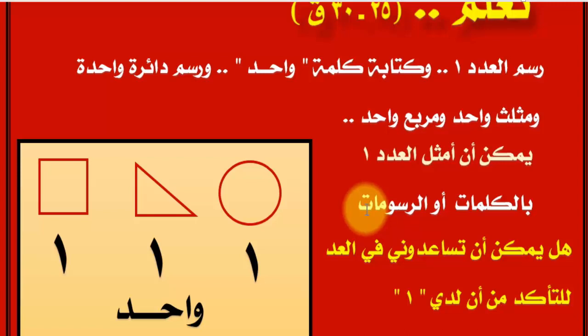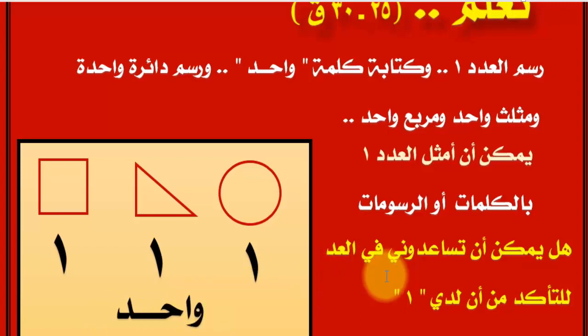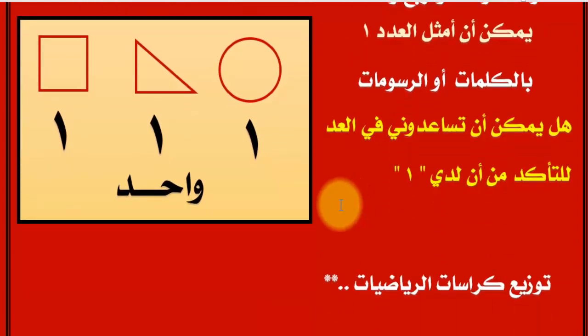المعلم بيقول للأولاد: هل يمكن أن تساعدوني عشان أتأكد إن اللي عندي ده واحد؟ فالأولاد يقولوا معاها: دائرة واحدة - واحد، مثلث واحد - واحد، مربع واحد - واحد. ويأكد عليهم كتابة كلمة واحد وحروفها: الواو، والألف الممدودة، والحاء، والدال.